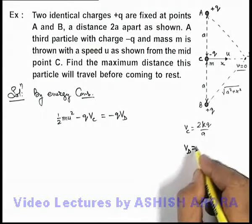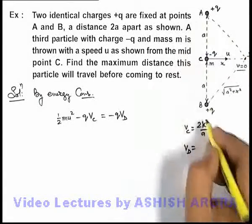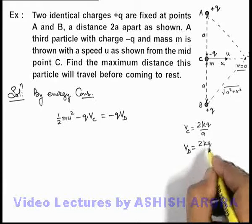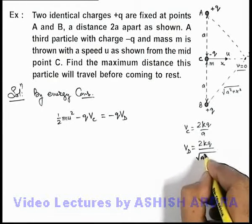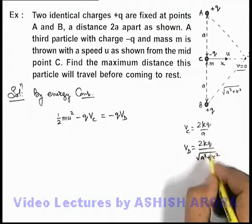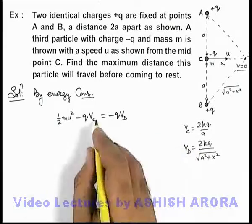So the potential at point D due to these two charges is 2kq/√(a²+x²). If we substitute these potentials here,